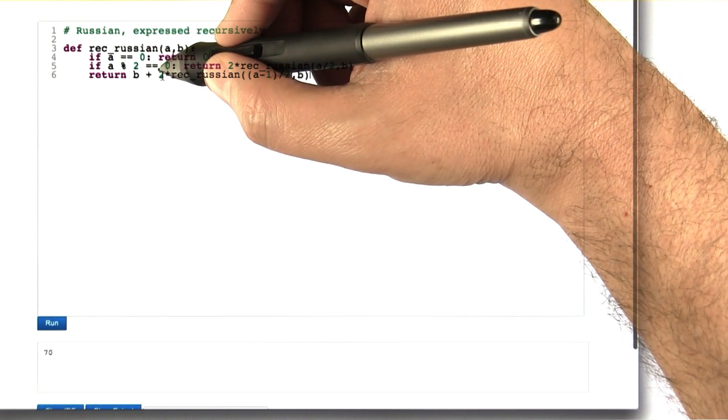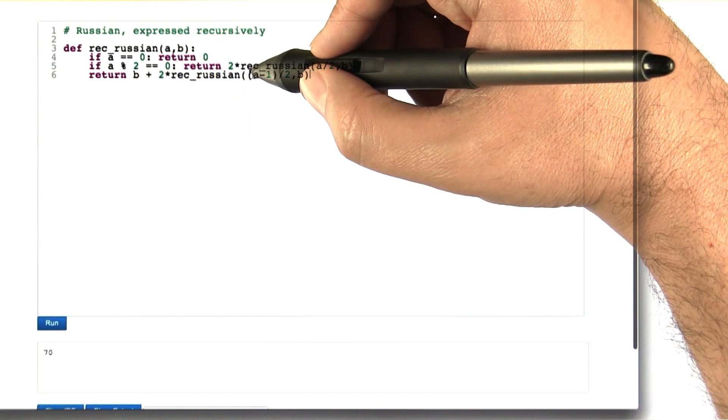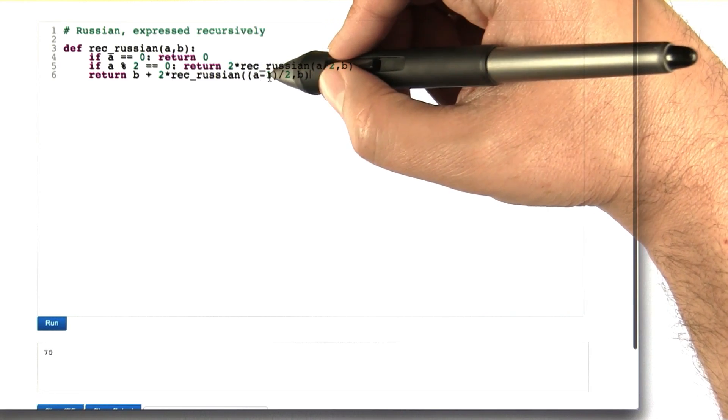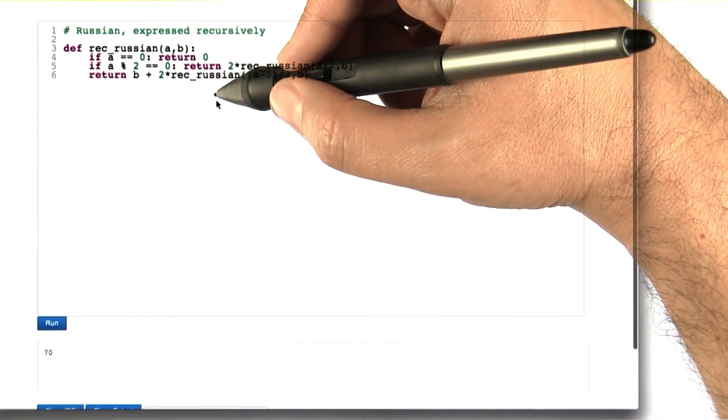Once we have the answer to that, we can multiply it by 2. Well, it's going to give us what a minus 1 times b is, which is a times b minus b. So we just add the b back in and we should be good.